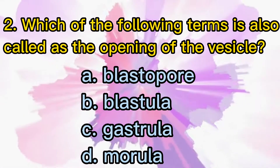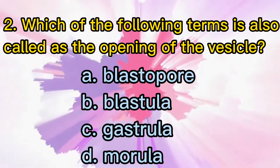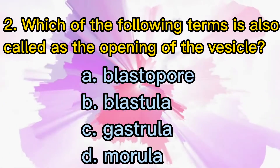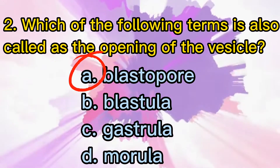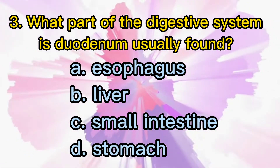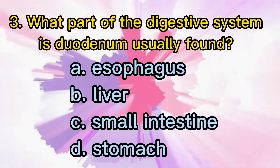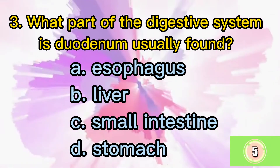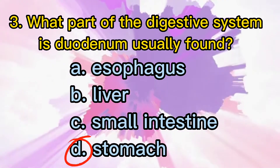Number 2: Which of the following terms is also called the opening of the vesicle? Letter A: Blastopore. Letter B: Blastula. Letter C: Gastrula. Letter D: Morula. The answer is Letter A: Blastopore. Number 3: What part of the digestive system is the duodenum usually found? Letter A: Esophagus. Letter B: Liver. Letter C: Small intestine. Letter D: Stomach. The answer is Letter D: Stomach.